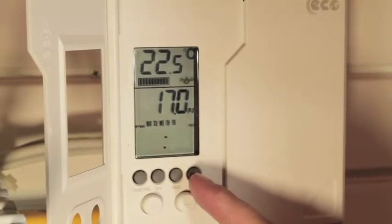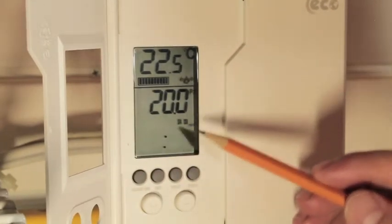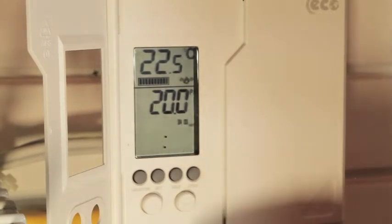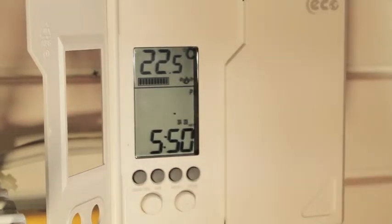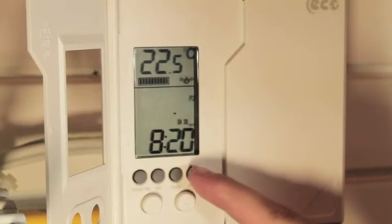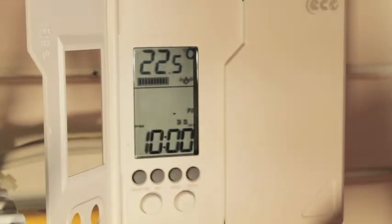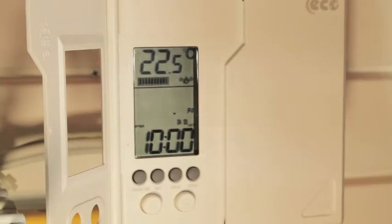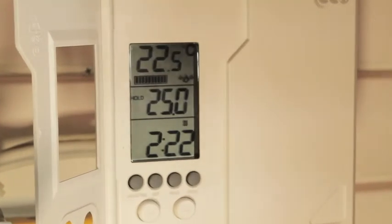After program four is set, you can press the PROG button again to advance to program one for the weekend. Here you can adjust using the arrow buttons again, switching between the time and temperature pressing the usage time button. Pressing PROG again will advance you through program two, three, and four for the weekend. After program four for the weekend, pressing PROG again will return you to the main screen.